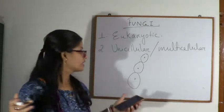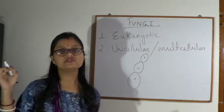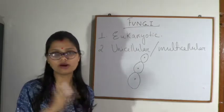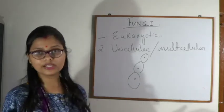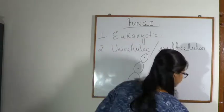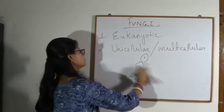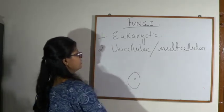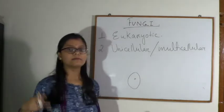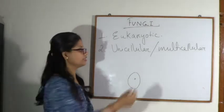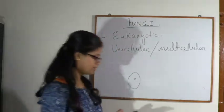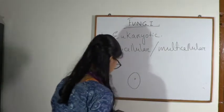One example of unicellular fungi is yeast. Yeast is a very good fungi — it is helpful. The main structure of yeast is a unicellular, single-cell structure. After budding it can form chains, but generally yeast is unicellular. Multicellular fungi are also there.